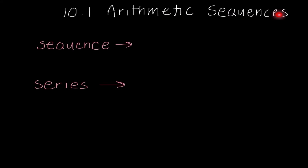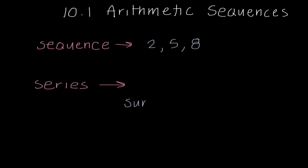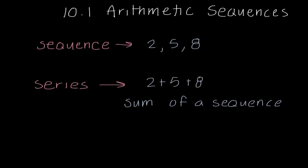I want to start by talking about what is the difference between a sequence and a series, because we're going to see these two terms a lot this chapter, and we definitely need to know the difference. A sequence is a set of numbers — for example, 2, 5, 8 — and we can see there's a pattern; we are adding 3 to get to the next term. A series is very similar, but it is actually a sum of a sequence, like 2 plus 5 plus 8. So a sequence is finding a number in the sequence; a series means we are finding a sum of that sequence.